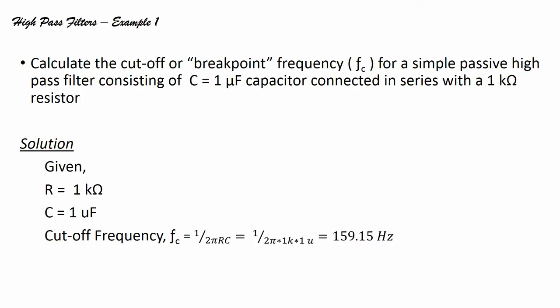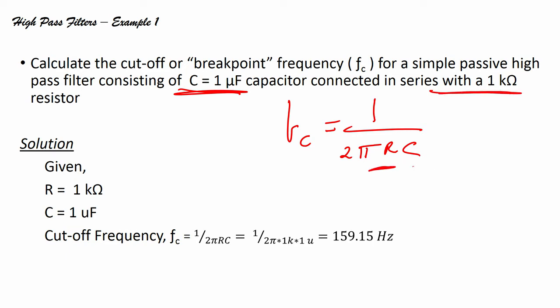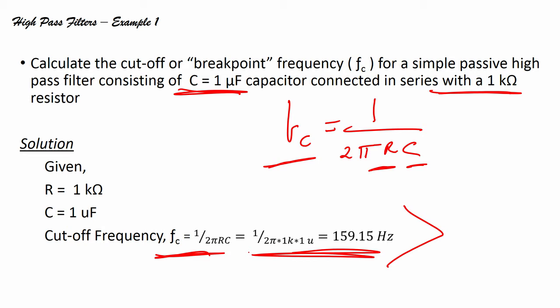Let us take an example and calculate the cutoff frequency or breakpoint frequency FC. For a simple passive high pass filter consisting of a capacitor C = 1 microfarad connected in series with a 1 kilo-ohm resistor, FC = 1/(2πRC) = 159.15 Hz. This is how we calculate the cutoff frequency of the high pass filter.